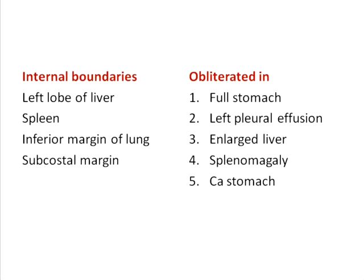The most common reason for obliteration of Traube's space is a full stomach. Clinically it is used in assessing left-sided pleural effusion. It can also be obliterated when the left lobe of the liver is enlarged, or in splenomegaly to the extent that it touches the region where the stomach fundus is present — typically in moderate to massive splenomegaly — and also in carcinoma of the stomach.